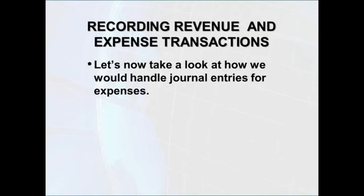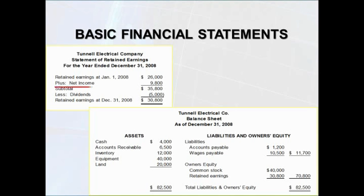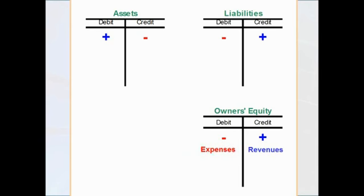We've looked at how to handle revenues. Let's next look at journal entries for expenses. Looking at the income statement, we see that expenses are subtracted from revenues to arrive at net income, so expenses reduce net income. And as we saw before, net income increases retained earnings. Since expenses cause a reduction in net income, they ultimately cause a reduction in retained earnings, which is a component of owner's equity. So expenses reduce net income, which reduces retained earnings, which reduces owner's equity. Items that reduce owner's equity should be recorded as debits. So expenses will be recorded as debits.